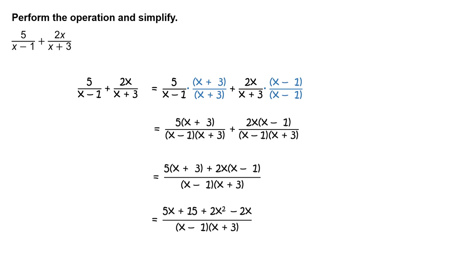In the numerator, use the distributive property. You will get the quantity 5x plus 15 plus 2x squared minus 2x, divided by the quantity x minus 1 times the quantity x plus 3.